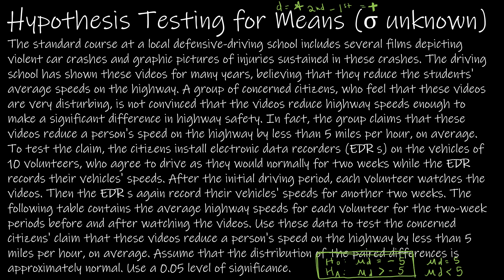Hopefully that made sense. The group claims these videos reduce a person's speed by less than five miles per hour on average. To test the claim, the citizens install EDRs on the vehicles of 10 volunteers — so N, the number of pairs of data, equals 10. They're going to drive for two weeks, watch the videos, then drive for another two weeks after watching. This is a paired test because it's the same person before and after, making it dependent data. That's everything we need, except for our level of significance. Let's move on to Excel.